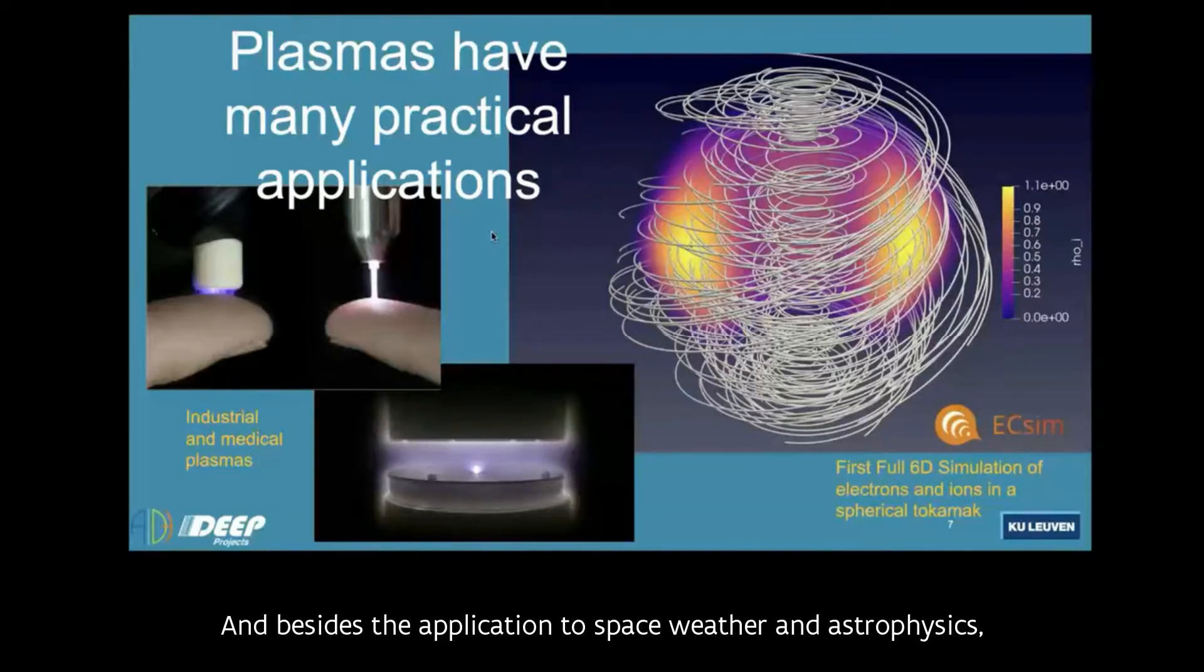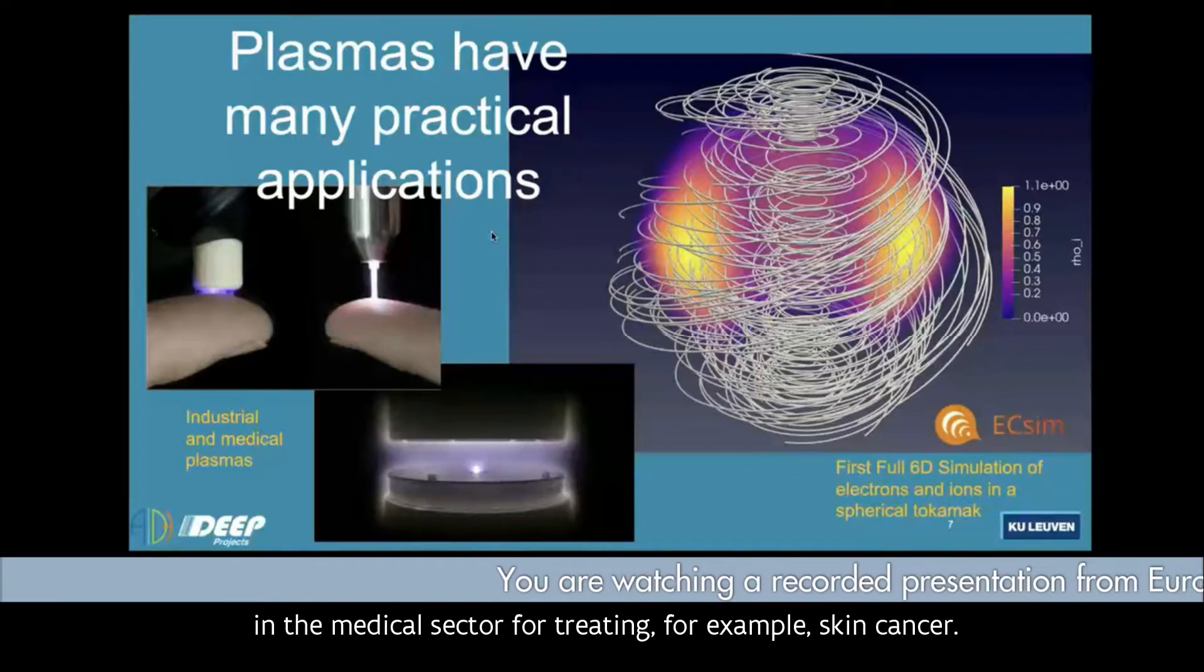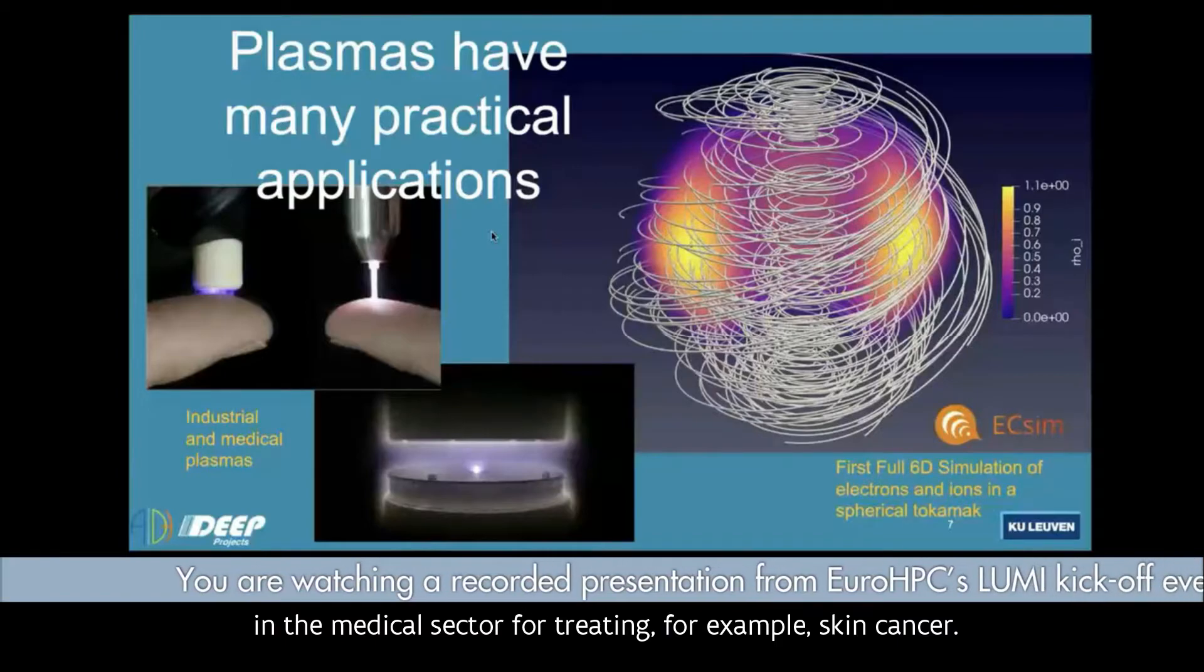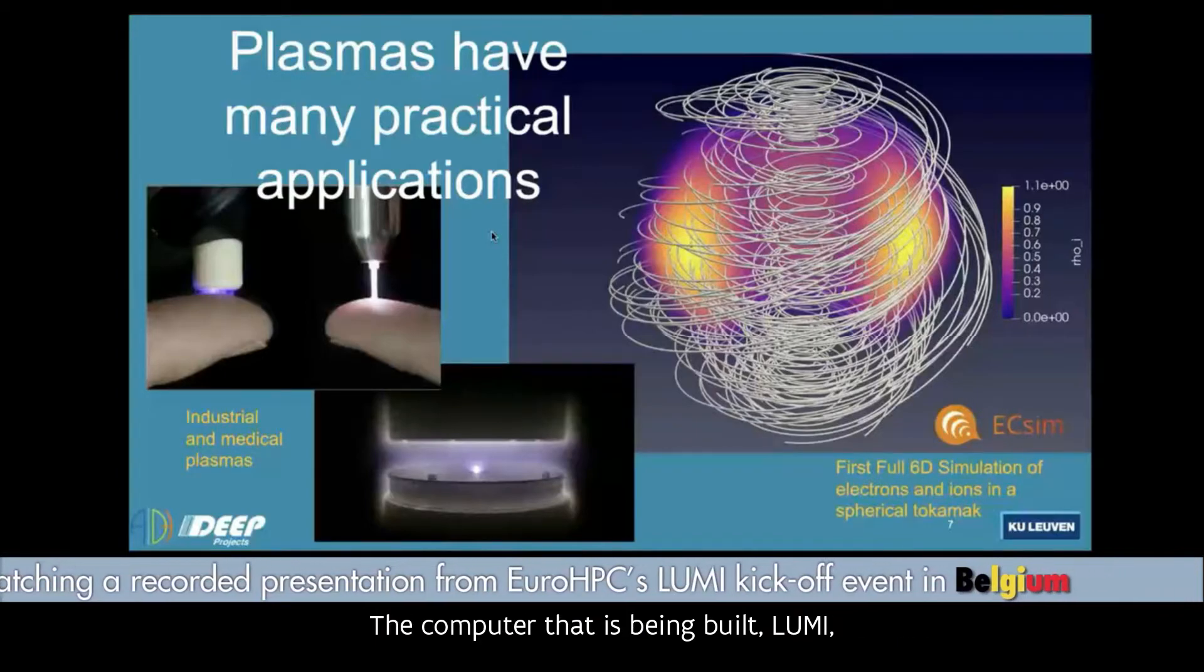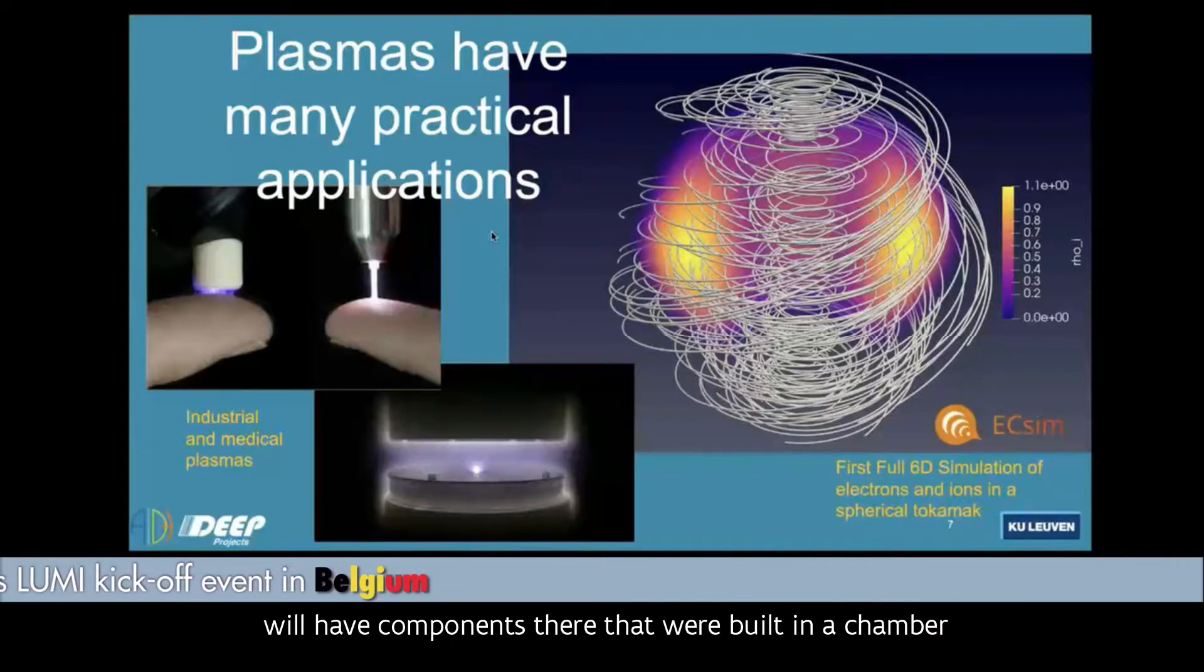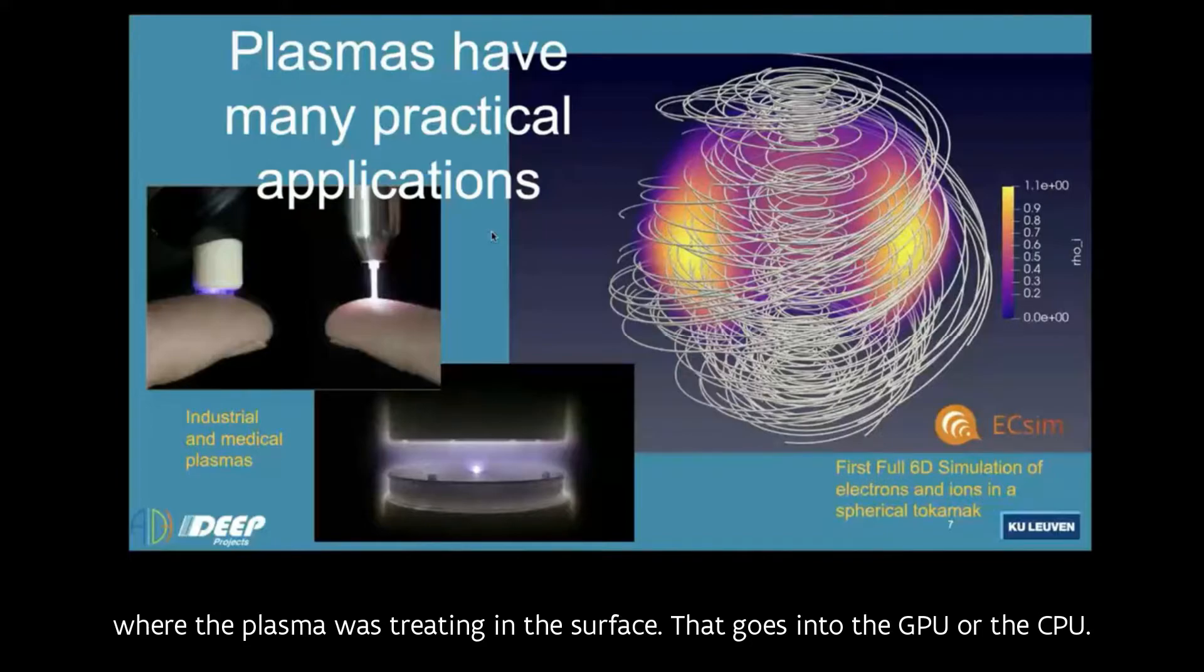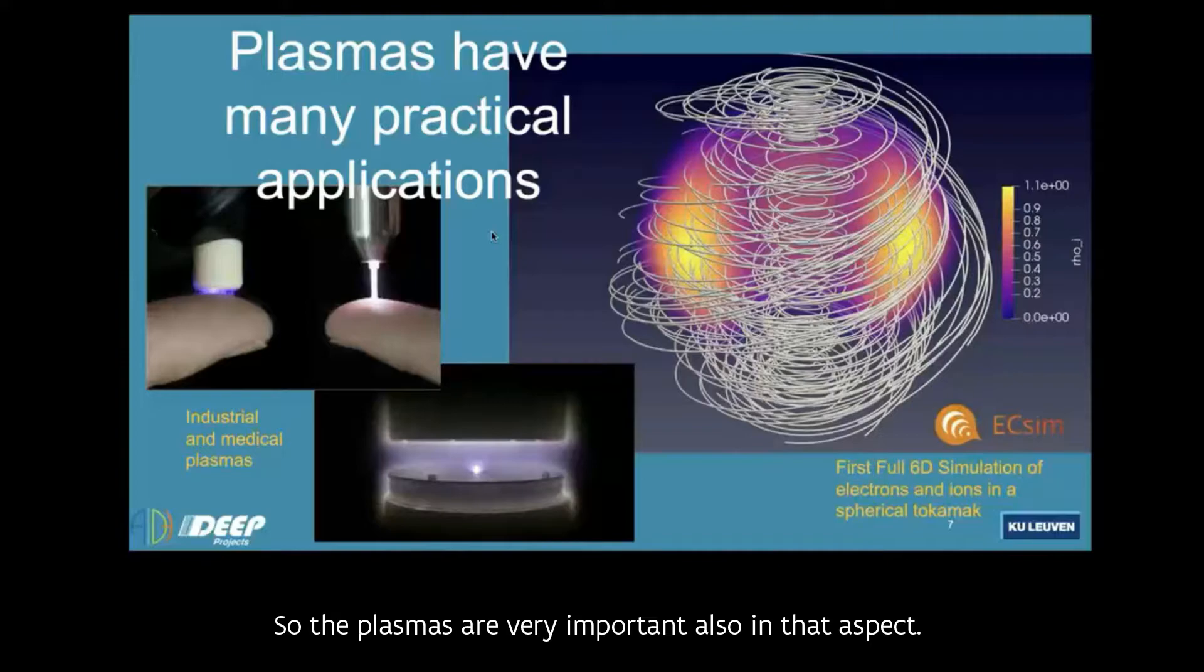Besides the application to space weather and astrophysics, plasmas are very important also in laboratory, in the industry, in the medical sector for treating, for example, skin cancer. The computer that is being built, Lumi, will have components there that were built in a chamber where a plasma was treating the surface that then goes into the GPU or the CPU. So the plasmas are very important also in that aspect.